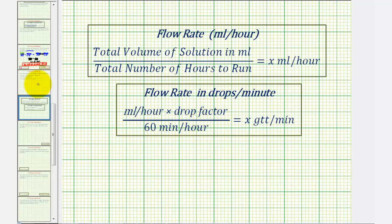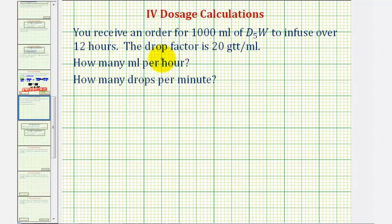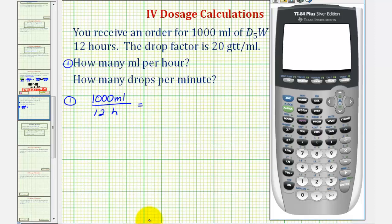Going back to our example, to determine the flow rate in milliliters per hour, we'll take 1,000 milliliters and divide by 12 hours. We'll use a calculator to determine this quotient. We have 1,000 divided by 12. Rounding to the nearest milliliter, the three in the tenths place value tells us to round down. So this will round to 83 milliliters per hour.